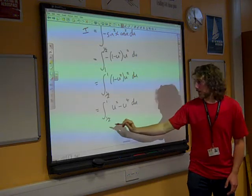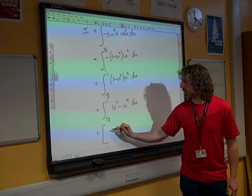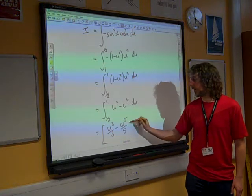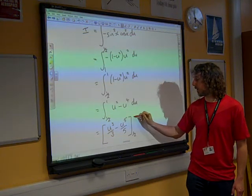We're now ready to integrate. u cubed over 3 minus u to the 5 over 5, between a half and 1.